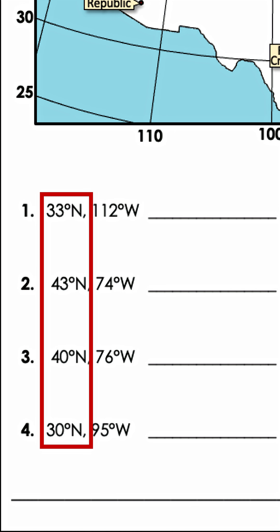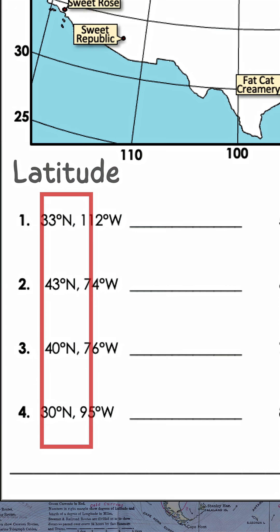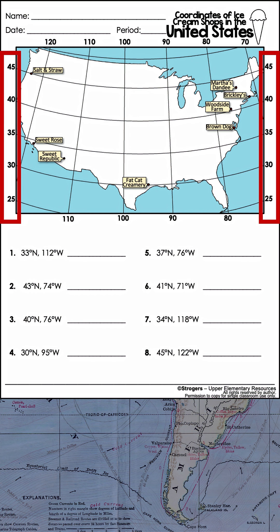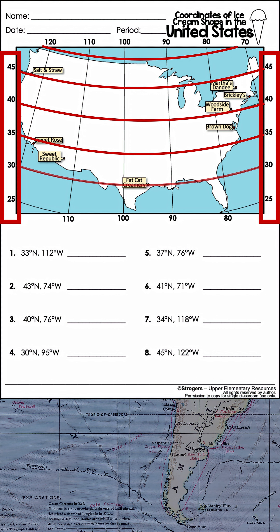The first number of the coordinates is the latitude. It tells you how many degrees north or south a location is from the equator. On your map, you'll find the latitude numbers and lines here. Latitude lines are always horizontal.